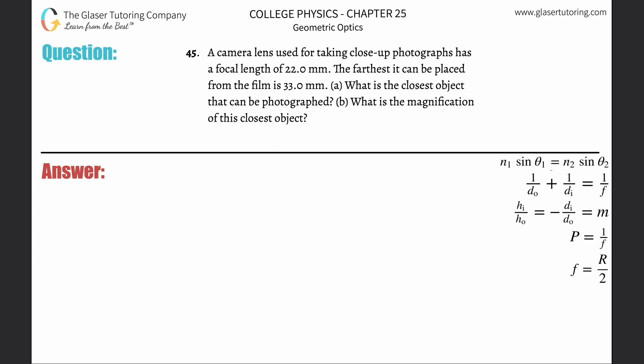Number 45: A camera lens used for taking close-up photographs has a focal length of 22 millimeters. The furthest that it can be placed from the film is 33 millimeters. Letter a: What is the closest object that can be photographed?